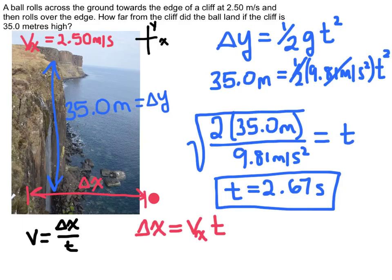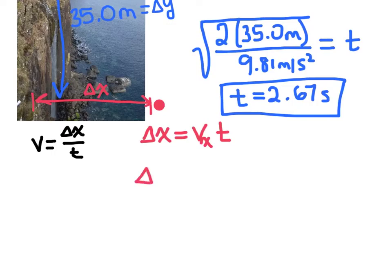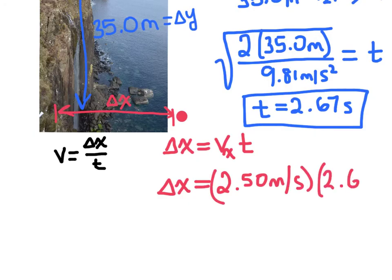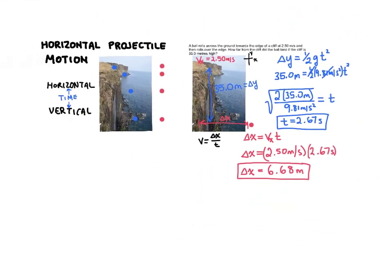Since the horizontal component is related to the vertical component by time — they share time — I can plug the time I just solved for into the equation for delta x. The initial velocity in the x direction was 2.5 meters per second, times the time of 2.67 seconds. So the distance the ball traveled in the x direction — the distance from the edge of the cliff — is 6.68 meters. Keep in mind that we are ignoring air resistance. That is horizontal projectile motion.